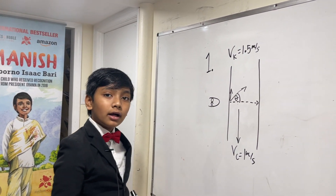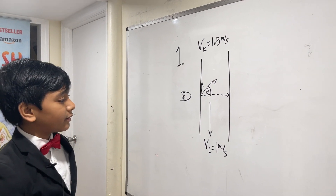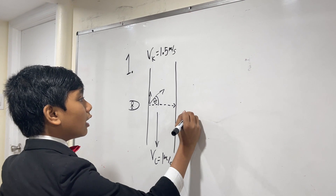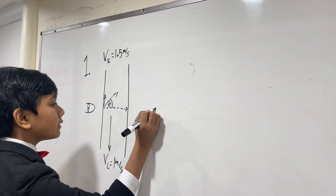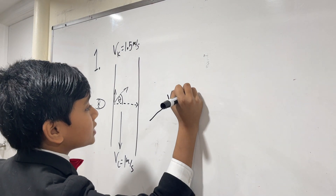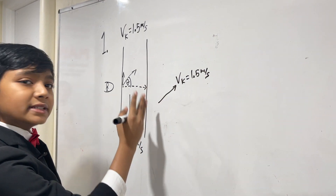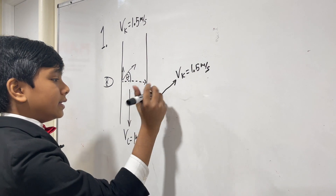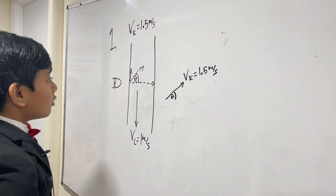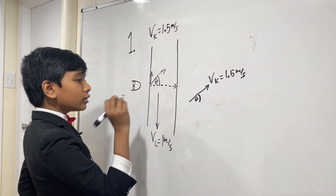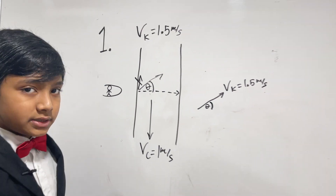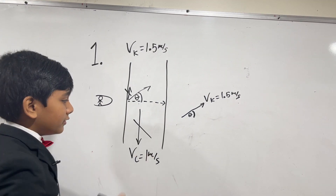This might seem like a tricky question at first, but with some thinking you can get it. We know that the velocity of the kayaker is 1.5 meters per second, and say she travels in this direction so that the current pushes her directly east. We want to know this angle. In order for her to travel directly east, the y-component of her velocity must cancel out with the current velocity vc.